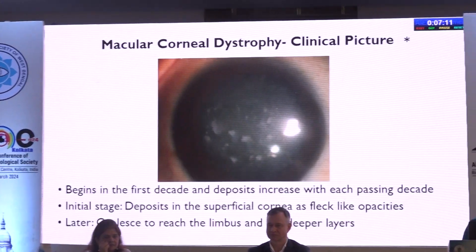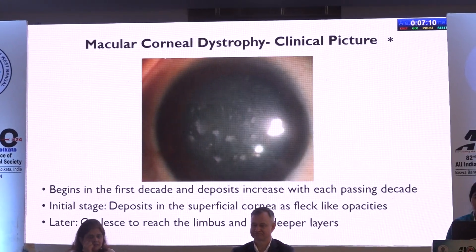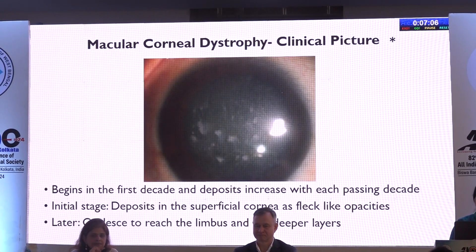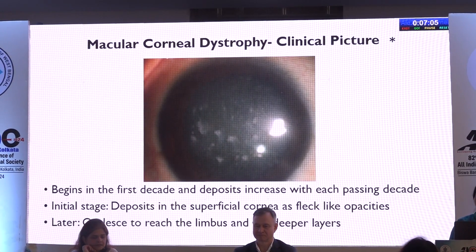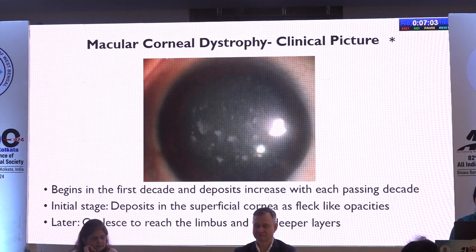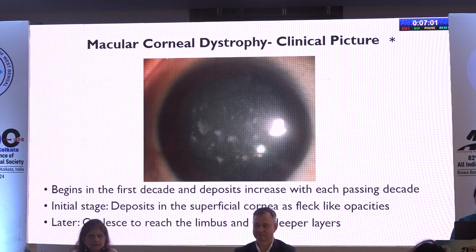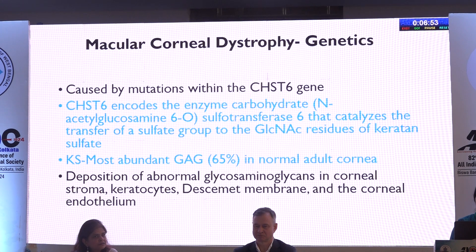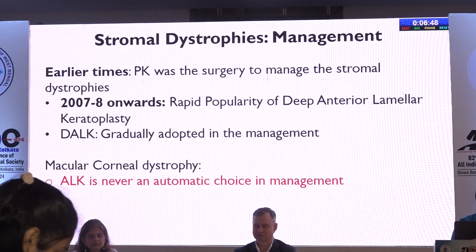Typically, the clinical picture of macular dystrophy is where it begins in the first decade, and deposits increase with each passing decade — initial deposits being superficial, then later coalescing to reach the limbus. The genetics: it is caused by mutations within CHST6, which leads to deposition of abnormal GAGs in the corneal stroma, keratocytes, Descemet's membrane, and the corneal endothelium.